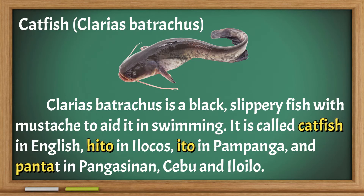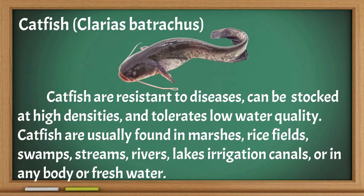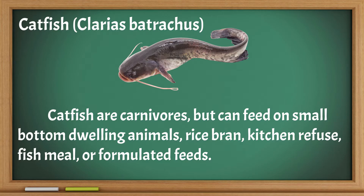Catfish (Clarias batrachus) is a black slippery fish with whiskers to aid it in swimming. It is called catfish in English, Ito in Ilocos, Ito in Pampanga, and Pantat in Pangasinan, Cebu, and Iloilo. Catfish are resistant to diseases, can be stocked at high densities, and tolerates low water quality. They are usually found in marshes, rice fields, swamps, streams, rivers, and lake irrigation canals. Catfish are carnivores but can feed on small bottom-dwelling animals, rice bran, kitchen refuse, or formulated feeds.